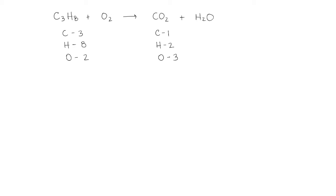Let's start with the carbon. We've got 3 on the left and 1 on the right, so I'm going to try 3 in front of the carbon dioxide, which gives me 3 carbon. But remember that also changes the number of oxygen, so now we have 6 from the carbon dioxide plus 1 from the water, which gives me 7 oxygen. And our carbon is balanced.